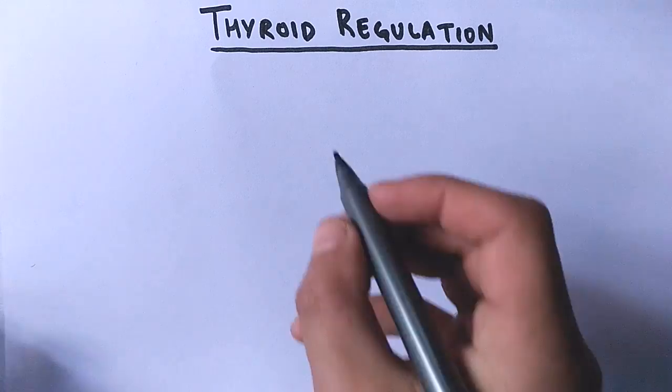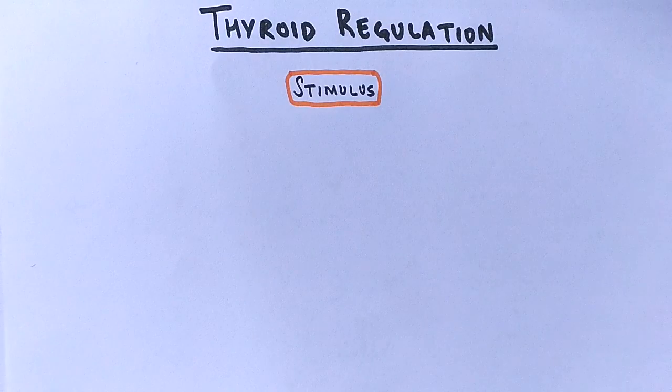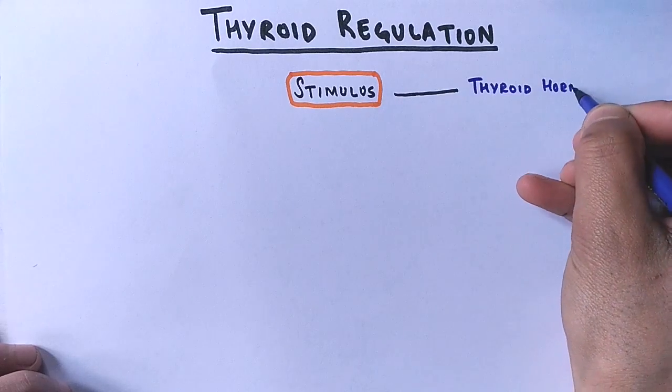First of all, there is a stimulus needed for the hypothalamus to make a releasing factor. When there is a stimulus like serum thyroid levels drop,